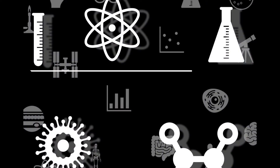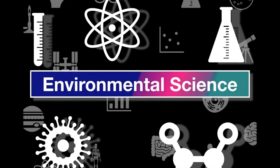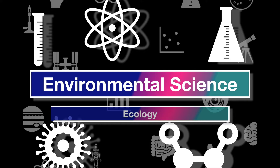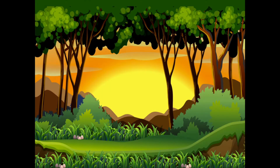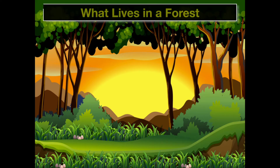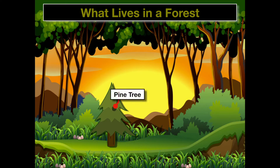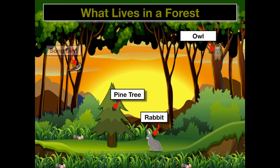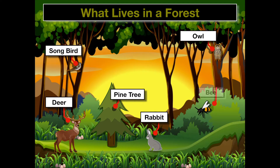This is our next video on environmental science, specifically going over ecology. If we were to look in a forest, what would live there? We might think there are conifers, pine trees, an owl, a rabbit, a songbird, a deer, a bee, and maybe even a fungi.